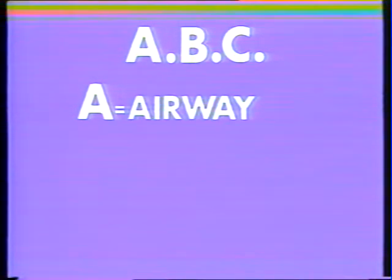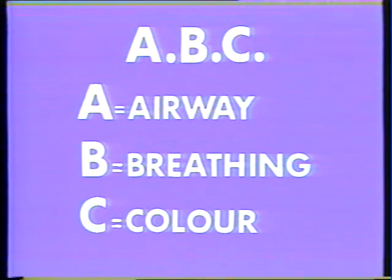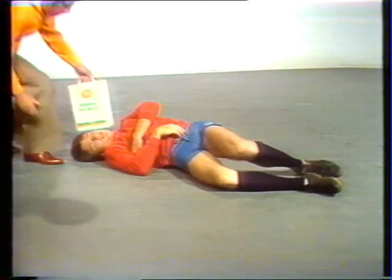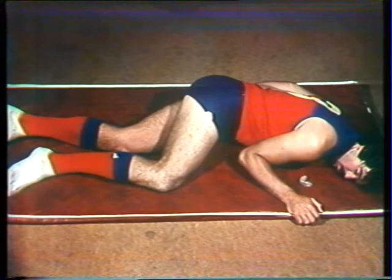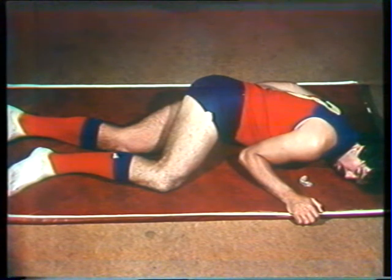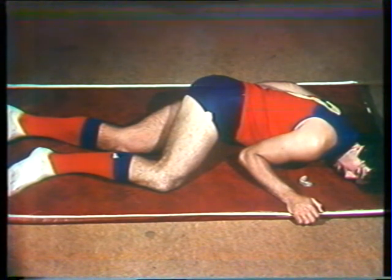The unconscious player is an important and dramatic incident in football. Conventional first aid features apply. The ABC checklist of unconsciousness is: A for airway, B for breathing and C for colour. Ensure that the airway is clear and not obstructed by the tongue, a mouth guard, chewing gum or vomitus. Check that breathing is adequate and colour is normal. Place in the coma position with slight head-down tilt to protect the airway should the victim vomit, and remove from the playing arena on a stretcher to seek medical advice.